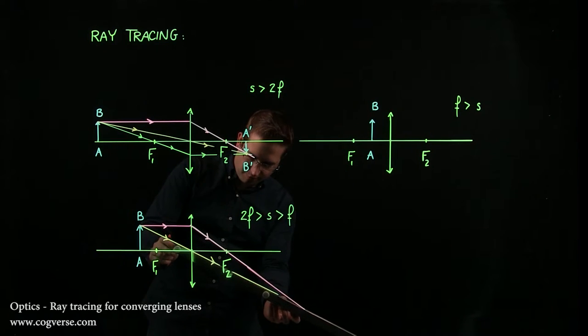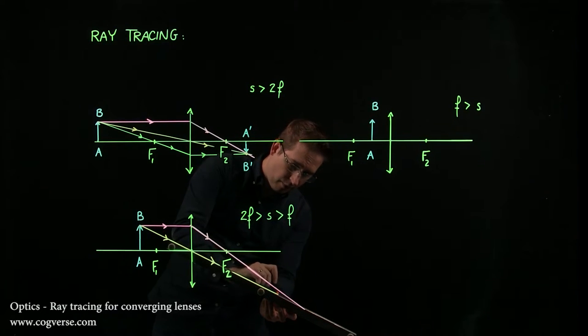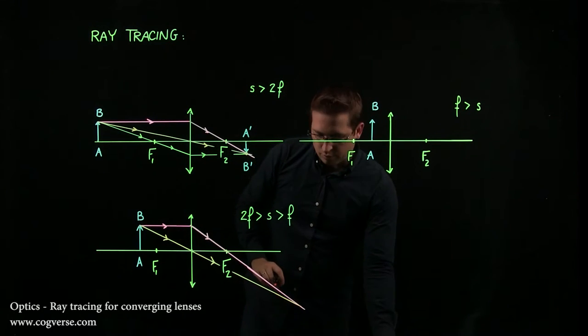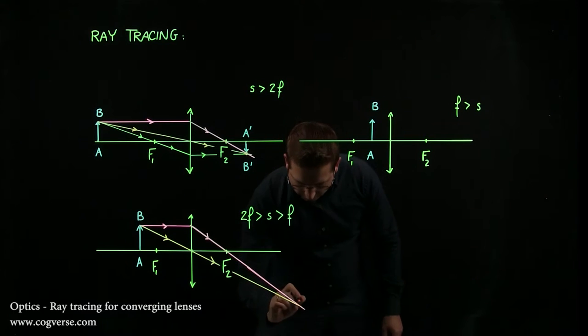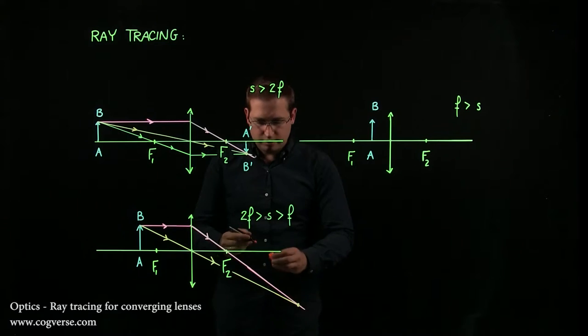But again, if you're very precise with your construction, and I would encourage you to use a ruler, though you could probably get away with not using one and still get pretty accurate results. If you do it with a ruler, then it's incredibly precise. Here we find an intersection here.